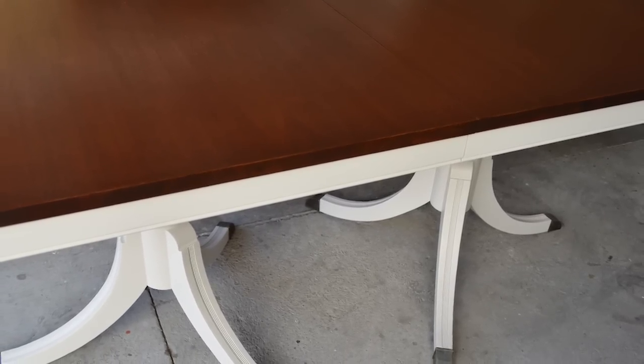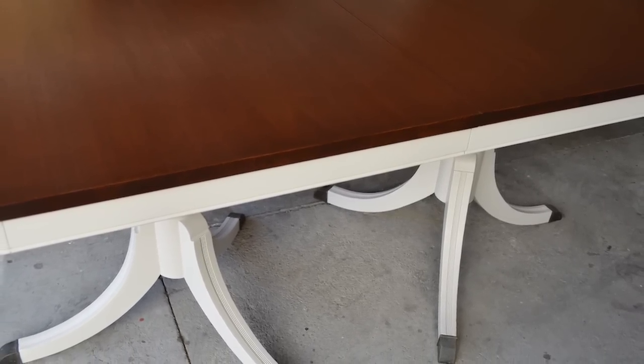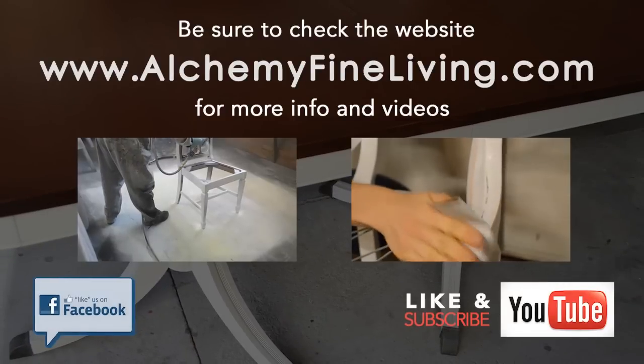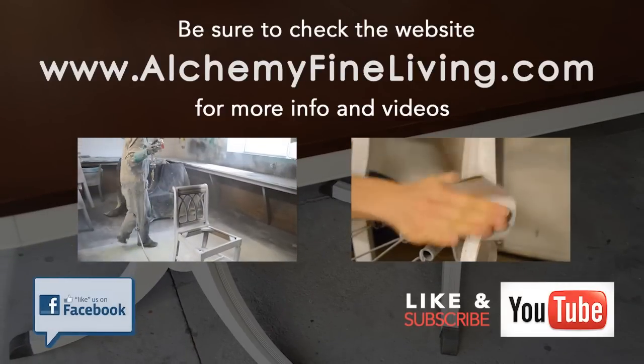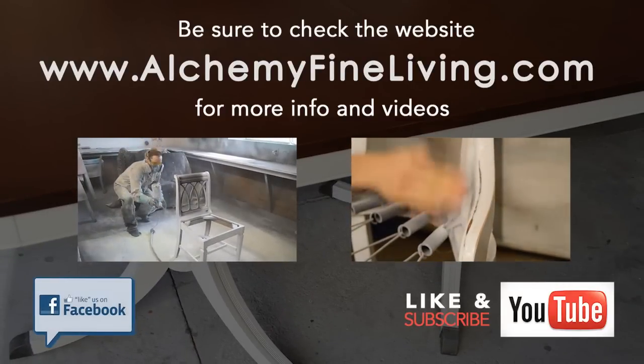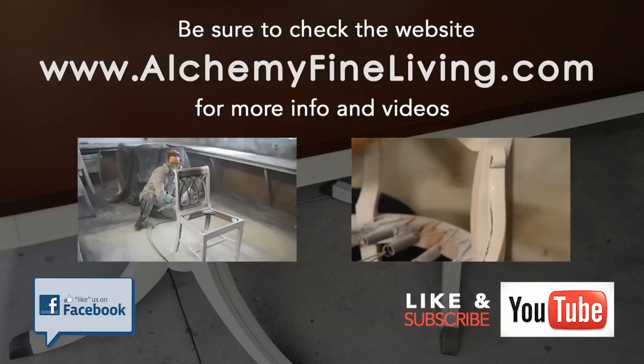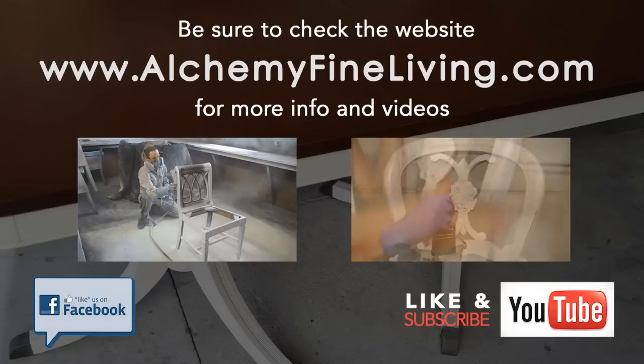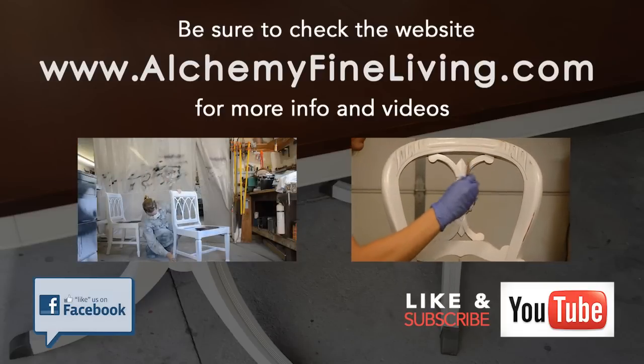Allow the oil to dry about 12 hours before buffing it lightly with a very fine steel wool pad. To build sheen and add protection, additional coats may be applied. I applied two layers of tung oil to this table.